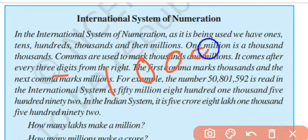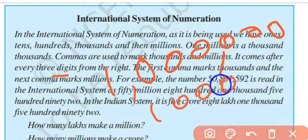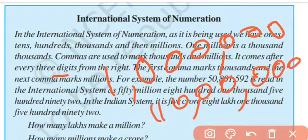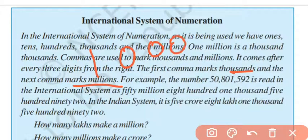When writing a number in the international system, we place a comma after every three digits from the right. So counting from the right: first three digits, then a comma; next three digits, then a comma. In the international system, the first comma marks thousands and the next comma marks millions.